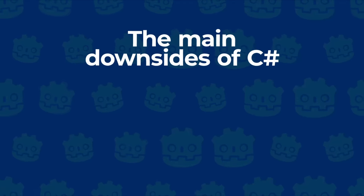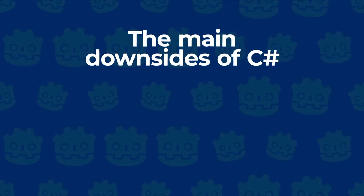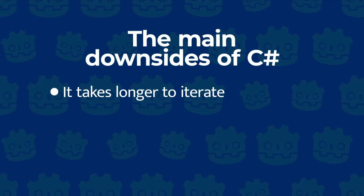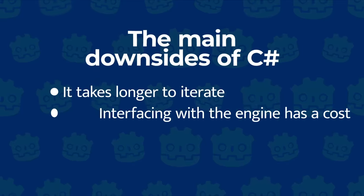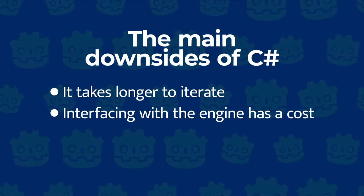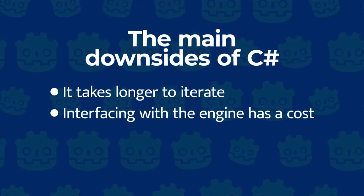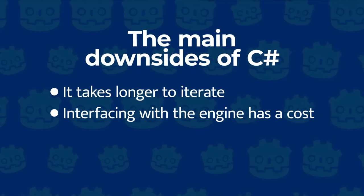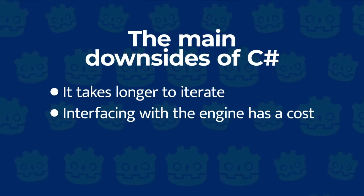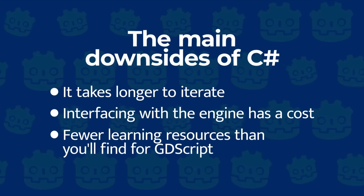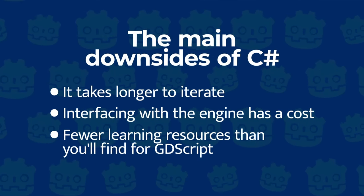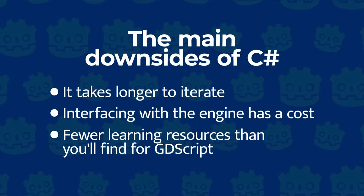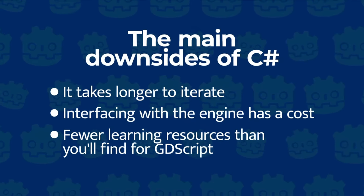The main downsides of C# are that it takes longer to iterate on your code, as you need to compile each time you change it. Interfacing with the engine has a cost, making it a little slower than GDScript when your code mostly calls engine functions. And there are fewer learning resources than you'll find for GDScript, so it's really more adapted to people who already know C#.